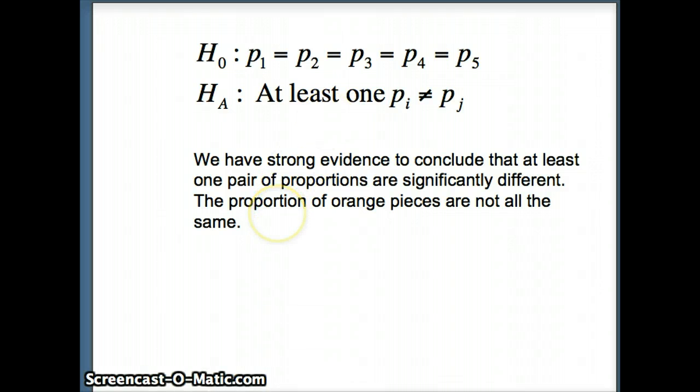I've said we have strong evidence, with the p-value so small, to conclude that at least one pair of proportions are significantly different. The proportion of orange pieces are not all the same for each of those five production runs.